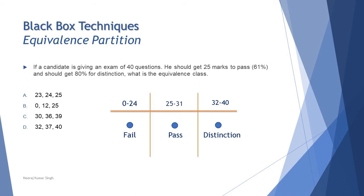So that means again it is not covering all the three partitions. Option C: 30 which is from second class, 36 from third class, 39 from third class. That means that also doesn't cover all the partitions. Option D: 32 from third class, 37 third class, 40 third class. That also doesn't cover all the right options.